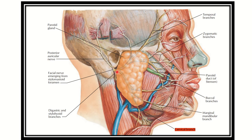We can see the facial nerve — when it reaches the parotid gland, it divides into five terminal branches: temporal, zygomatic, buccal, marginal mandibular, and cervical. The question wants to know which muscle the cervical branch supplies.